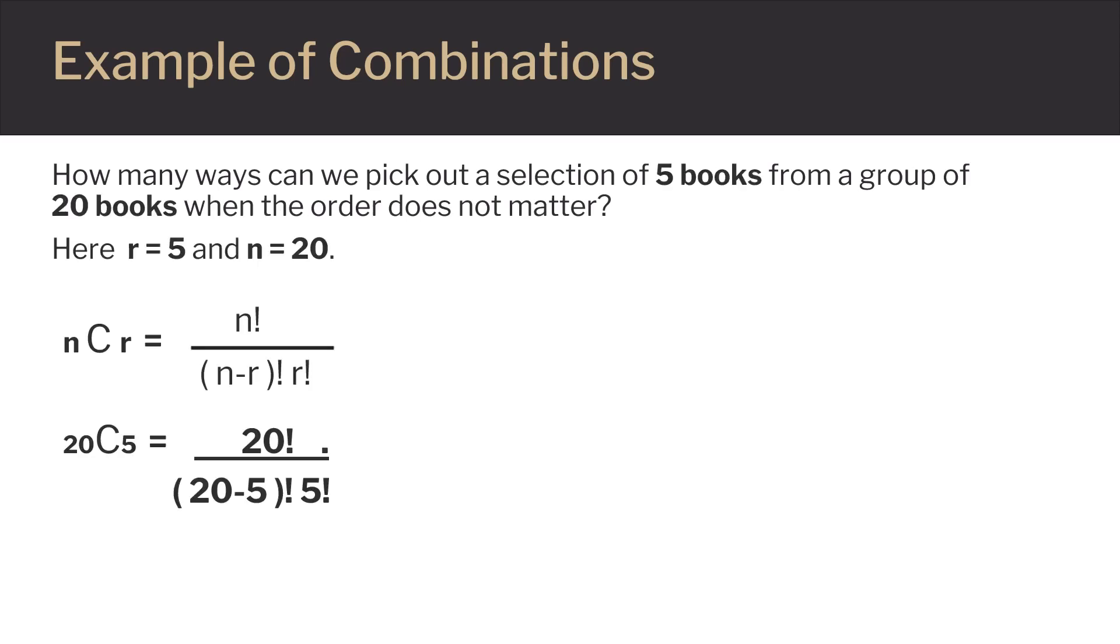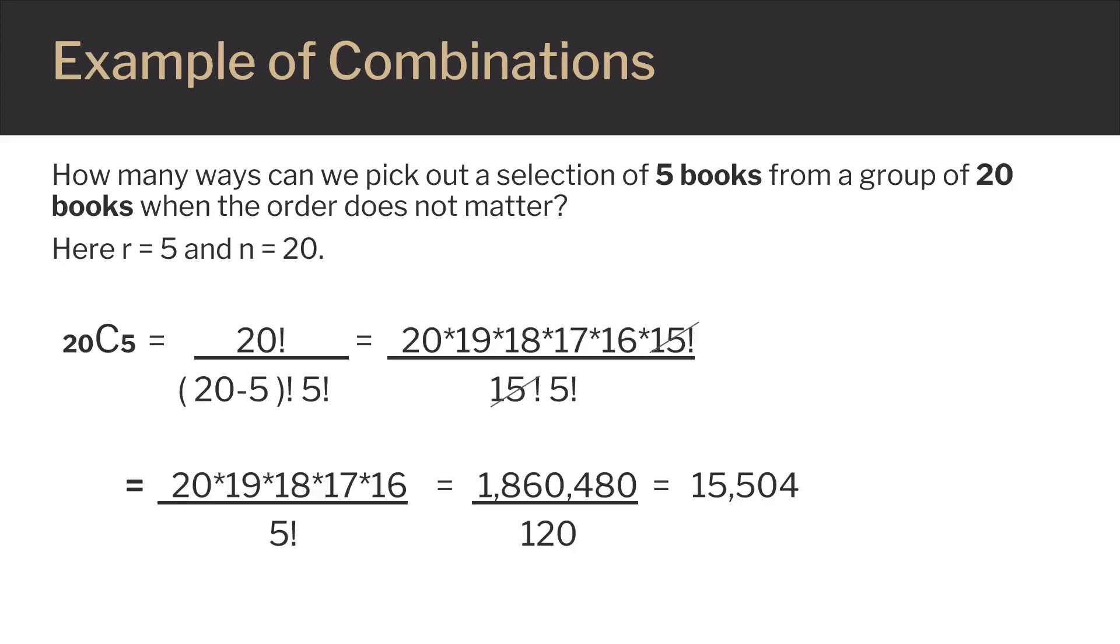The first thing we do is rewrite the formula with r equals 5 and n equals 20. This gives us 20 factorial on the top and that is divided by 20 minus 5 factorial, multiplied by 5 factorial. Following the order of operations, we do what is in parentheses first and subtract 5 from 20. So now on the bottom we have 15 factorial times 5 factorial.